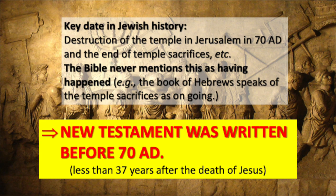The natural explanation for this silence is simply that the New Testament was written before 70 AD. Jesus was probably killed in AD 33, so that means each book of the New Testament was written before 70 AD — that's 37 years. Bob and I have been married for getting on 42 years, which is longer than the time between the crucifixion and the destruction of the temple.